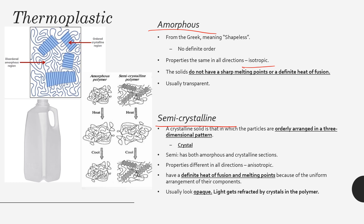Amorphous polymers are usually transparent, which makes them good for optical applications. For example, in eyeglasses — if the lens is made of a polymer rather than actual glass, it is probably a transparent amorphous polymer.